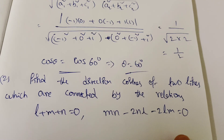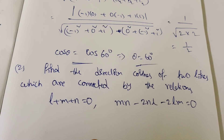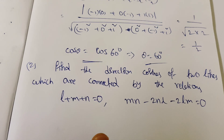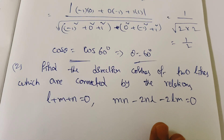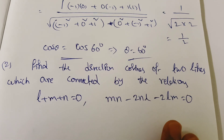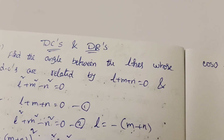This is the second question: find the direction cosines of two lines which are connected by the relations L plus M plus N equal to 0 and MN minus 2NL minus 2LM equal to 0.